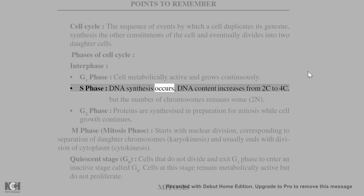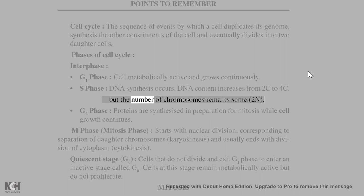In S phase, DNA content increases from 2C to 4C, but the number of chromosomes remains the same, 2N.